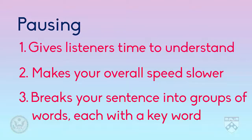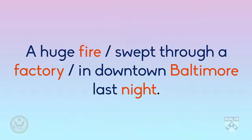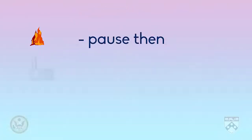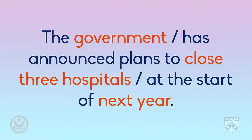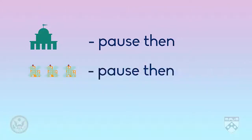Let's look again at the examples we used earlier and think about pausing. "A huge fire swept through a factory in downtown Baltimore last night." Here we have three different parts to the sentence, each containing at least one key word. "The government has announced plans to close three hospitals at the start of next year." Again, we have three different parts to the sentence, each containing at least one key word.